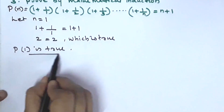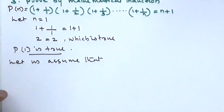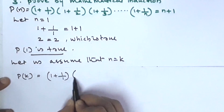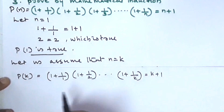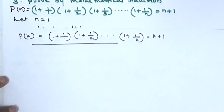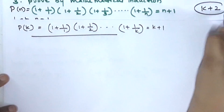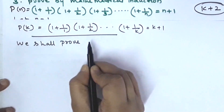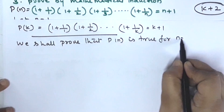Now, assume n equal to k. P(k): (1 + 1/1)(1 + 1/2)···(1 + 1/k) = k + 1. This is our leading step. We shall prove that P(n) is true for n equal to k plus 1.